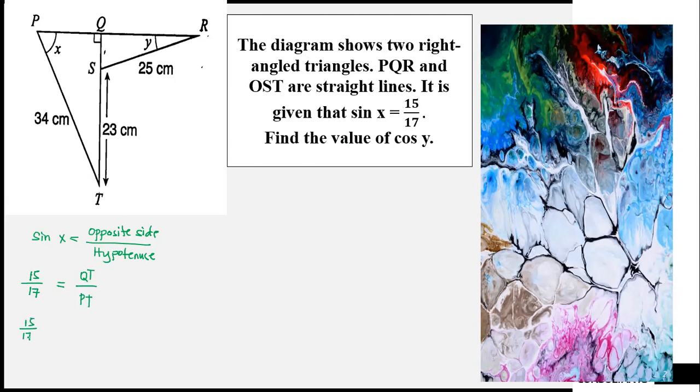15 over 17 equals line QT, which doesn't have a measurement. PT has a measurement of 34 centimeters. Then QT equals 15 divided by 17 times 34. 34 times 15 equals 510 divided by 17 equals 30. So, QT is 30 centimeters.